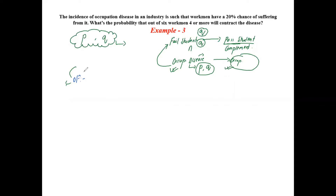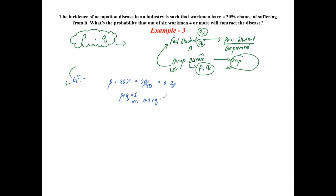That is the probability of the person or people suffering from the occupational disease — this gives us our probability of success for the binomial distribution.